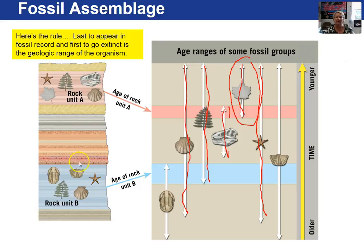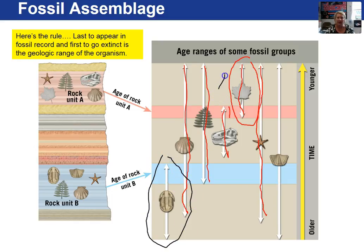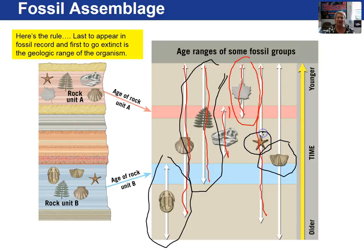Now I want you to look at this fossil assemblage and determine what the age range of rock unit B is using the same rule. Pause the video and think for a moment. In rock unit B, we have the trilobite, the fossil fern once again, the brachiopod, the starfish, and once again the scallop — five fossils total.